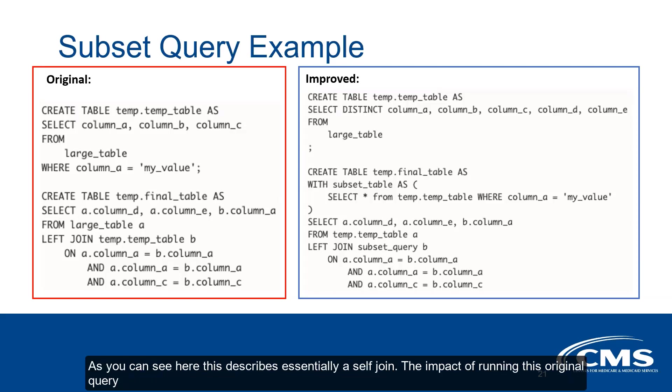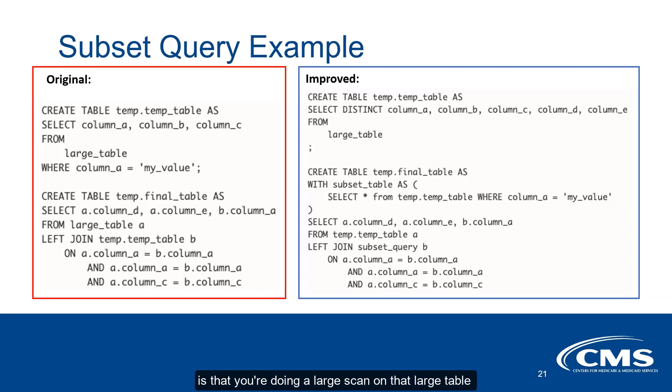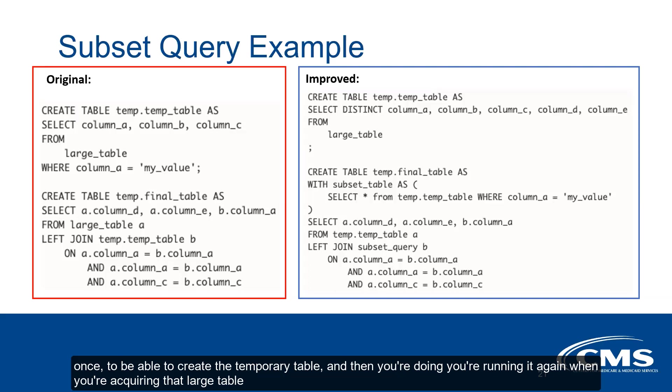As you can see here, this describes essentially a self-join. The impact of running this original query is that you're doing a large scan on that large table once to create the temporary table, and then you're running it again when you're querying that large table and joining it with a subset of records that you have filtered out.